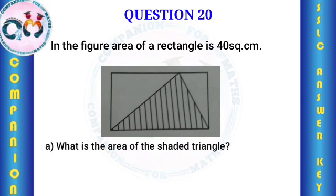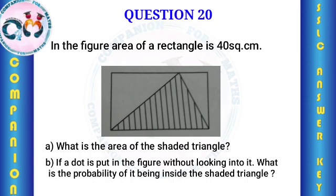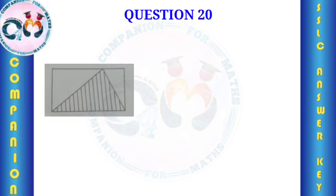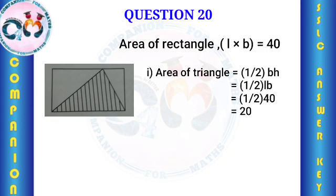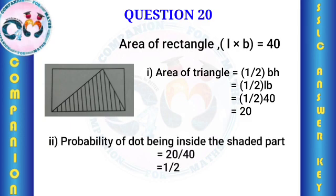In the figure, the area of the rectangle is 40 square centimeters. What is the area of the shaded triangle? The area of the triangle is half into base into height, which equals half into L into B, which is half into 40 = 20 square centimeters. The probability of a dot placed randomly being inside the shaded triangle is area of triangle divided by total area = 20 divided by 40 = 1 by 2.